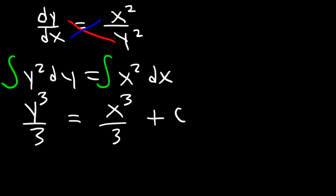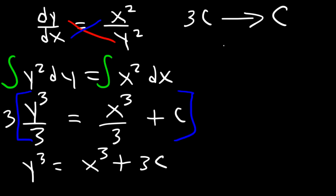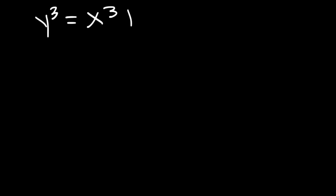So now let's get y by itself. Let's multiply both sides of the equation by 3, so it's going to be y cubed is equal to x cubed plus 3c. Now 3c is a constant, so we can just write c for the total sum of all constants. So you can rewrite this as y cubed is equal to x cubed plus c. And so this is the answer.